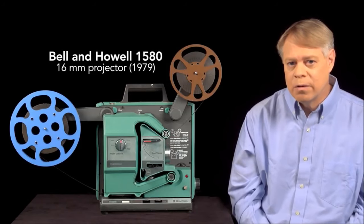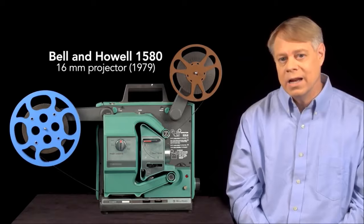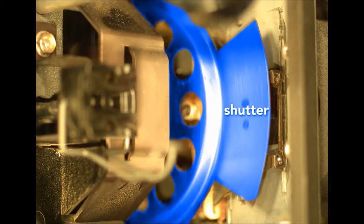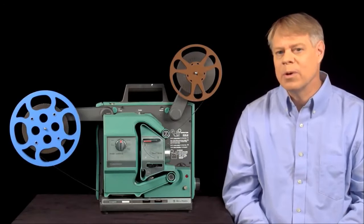I'll examine this Bell & Howell 1580 16mm projector built in 1979. We'll look at the shuttle that starts and stops the film, the shutter that strategically blocks light, and the photo sensor that reads the sound, all of which operate in harmony.